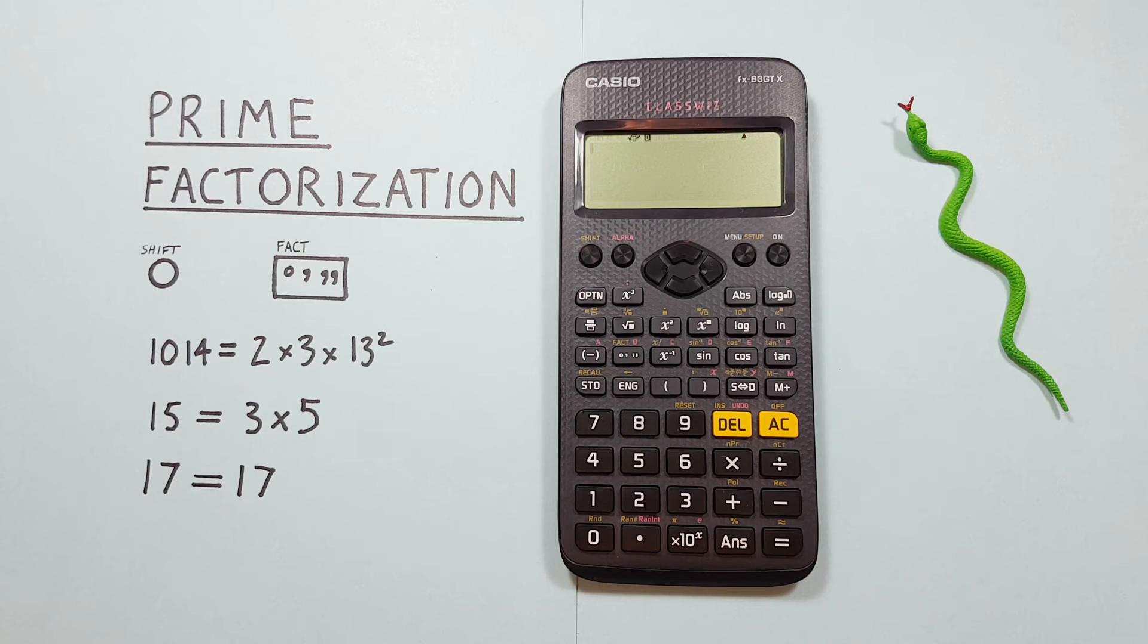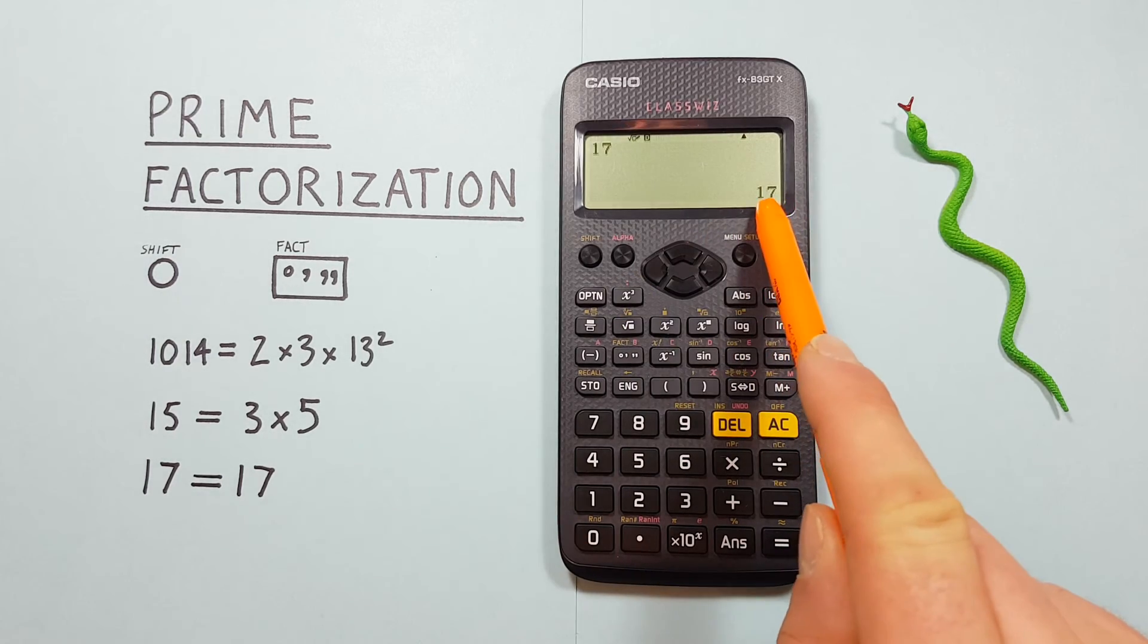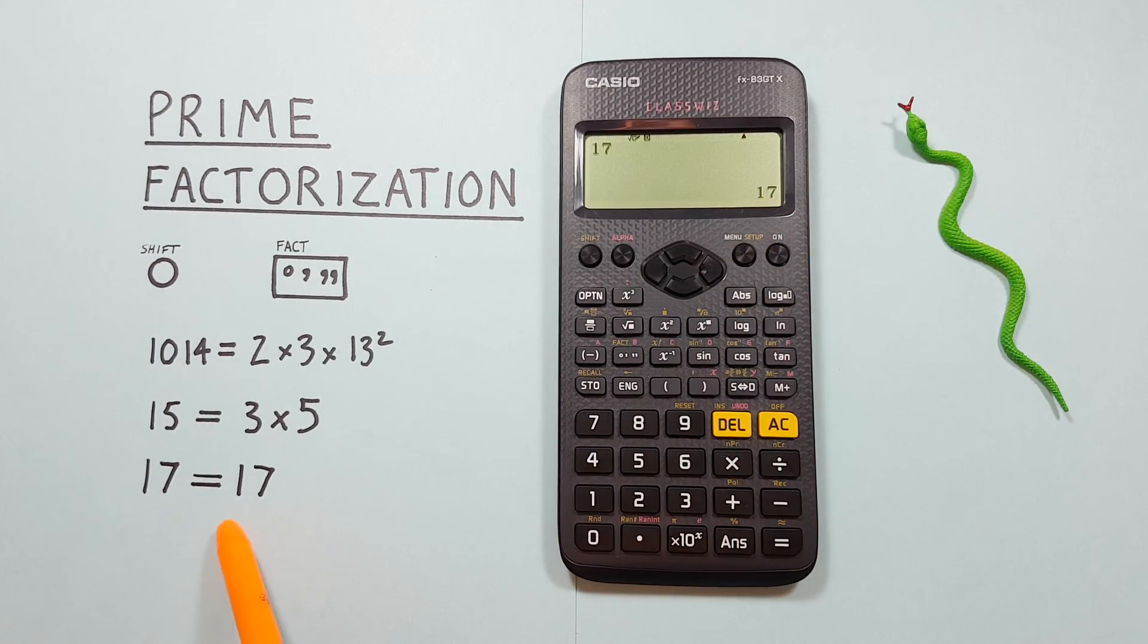This can also be used to determine if a number is prime, like say 17. If we place it on our screen and then go shift to our factor key and see that nothing changes, that's because this number is already prime.